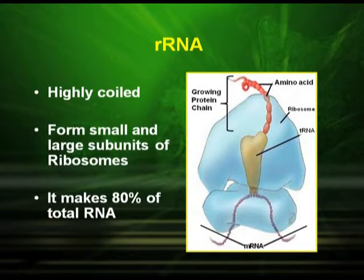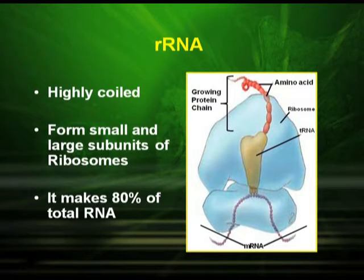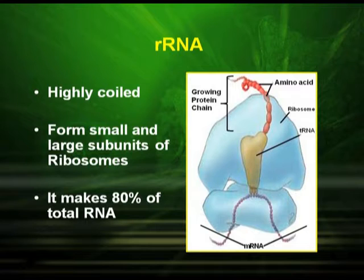The next important RNA is rRNA, called ribosomal RNA. This is highly coiled. It forms the small and large subunits of ribosomes and makes up 80% of the total RNA. The picture clearly shows the small subunit and the large subunit.